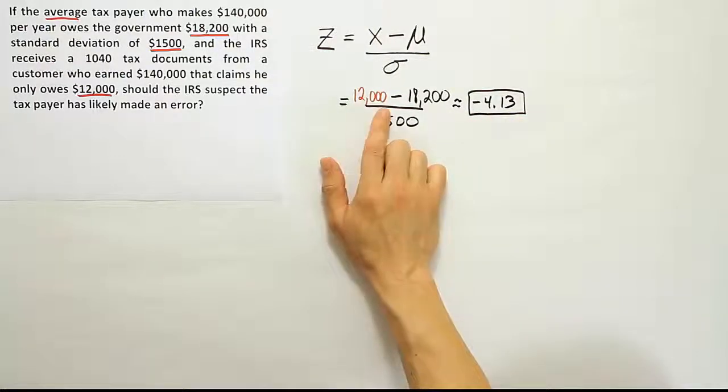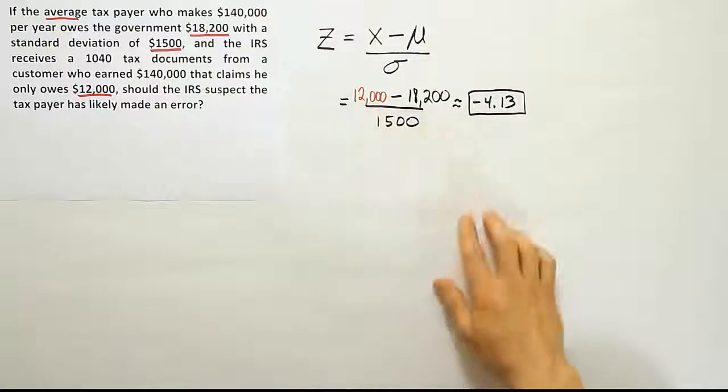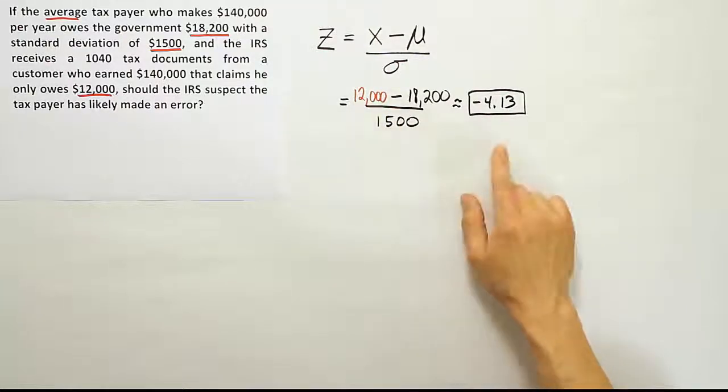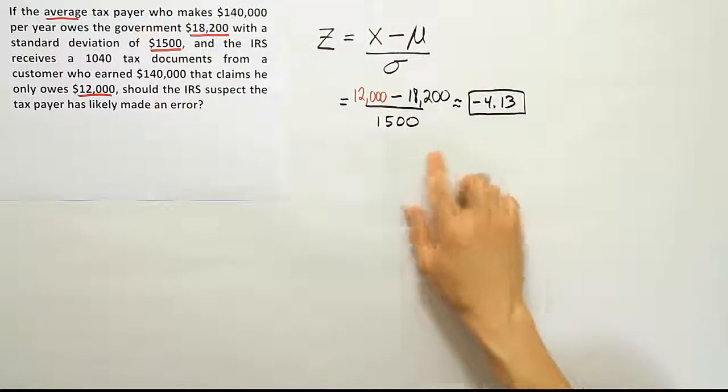So we'll definitely consider this $12,000 pretty unusual, and in that case, it might possibly be an error. The IRS should probably look into the tax document closely to see if they can find a mistake.